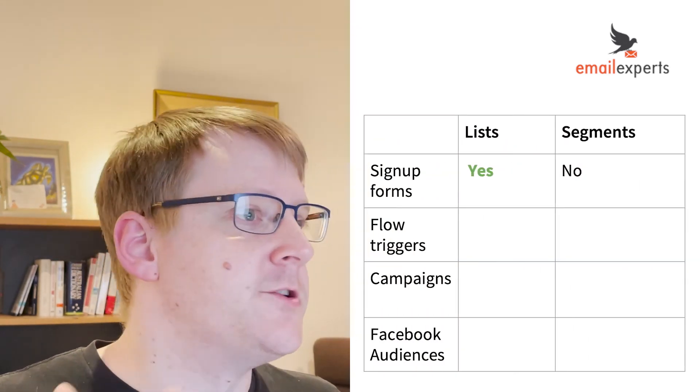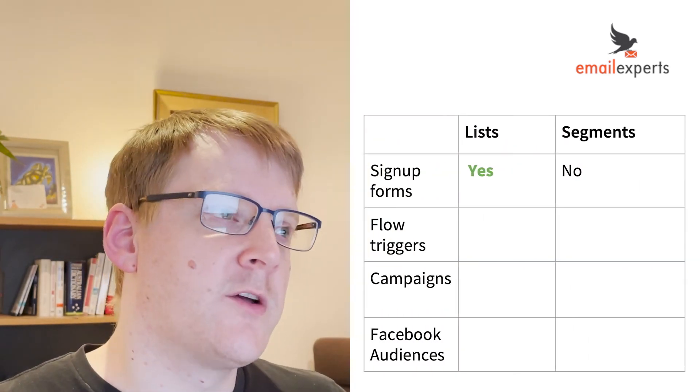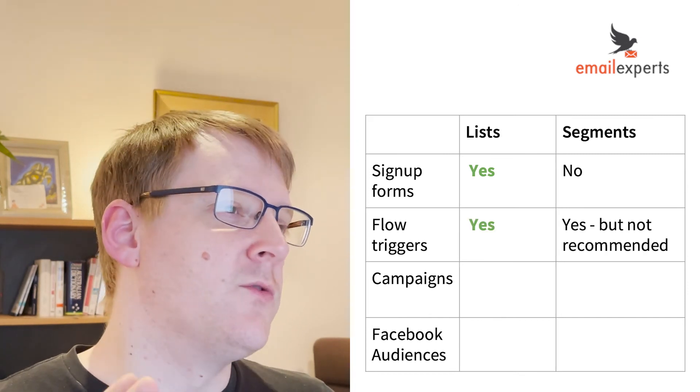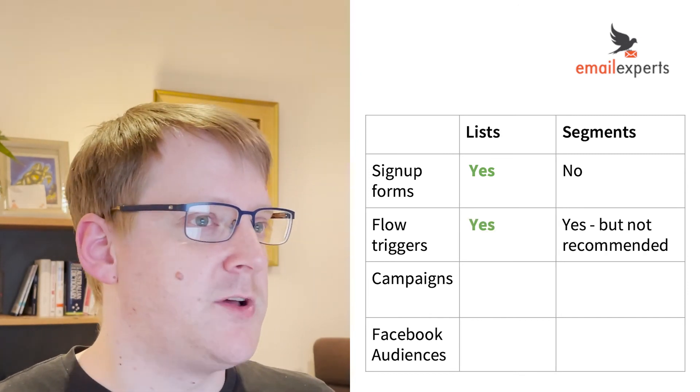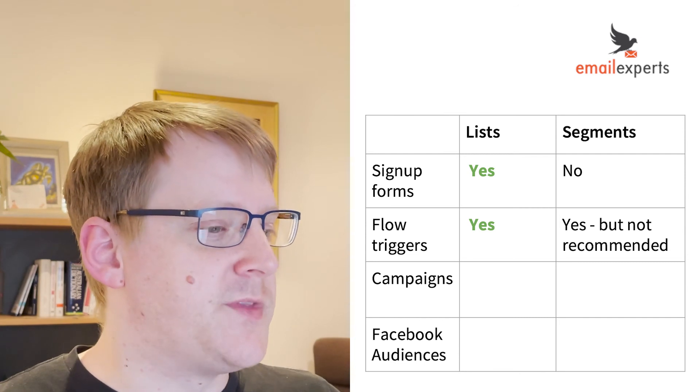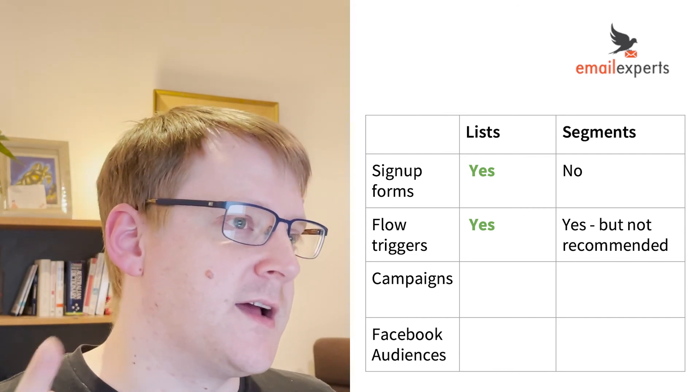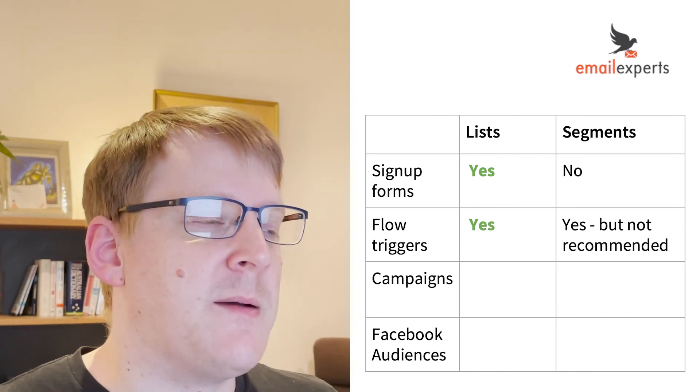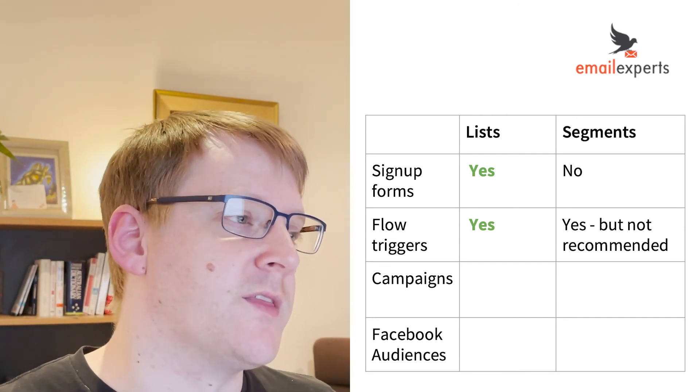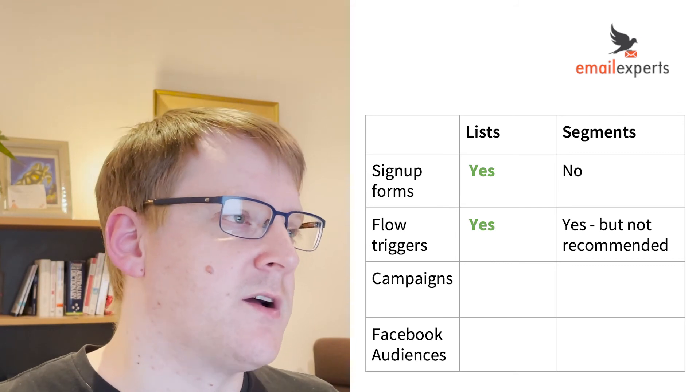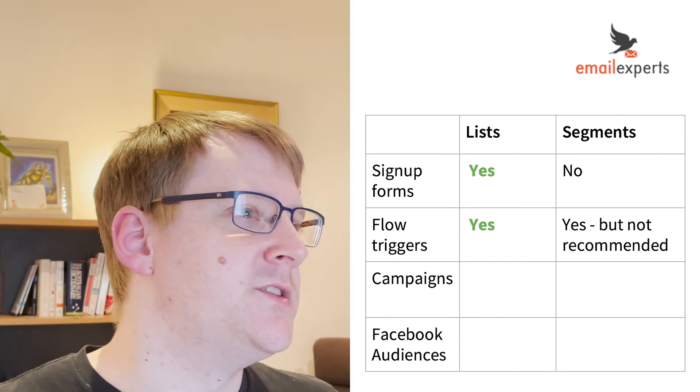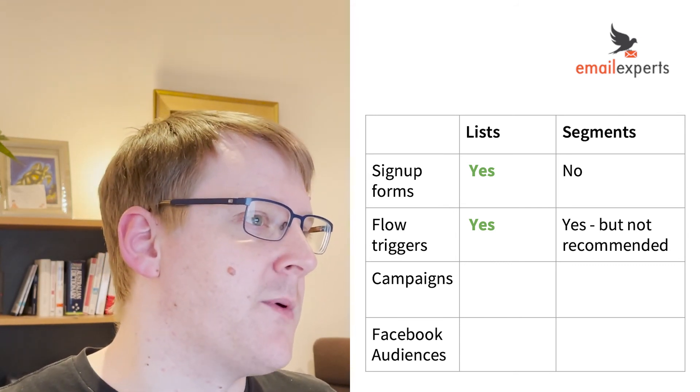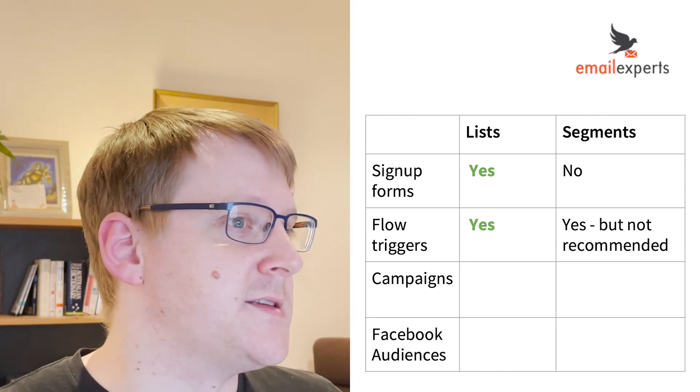So when should you use a list and when should you use a segment? So when you create a signup form, you have to connect that to a list. You don't have an option. When you are creating a flow trigger, then I always recommend using a list. It is possible to use a segment, but segments don't always calculate exactly in real time. So someone might subscribe and meet the rules of the segment, but there might be a delay before they trigger the welcome series, for example. So I recommend using lists and especially since you're already connecting the signup forms to the lists anyway, I recommend using the list as the trigger there.